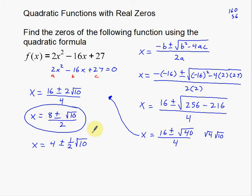Most of the time we like to write these as a single fraction — here's your numerator up here, here's your denominator down here. Those are two real solutions: 8 plus the square root of 10 divided by 2, and 8 minus the square root of 10 divided by 2. That gives us two different real solutions.